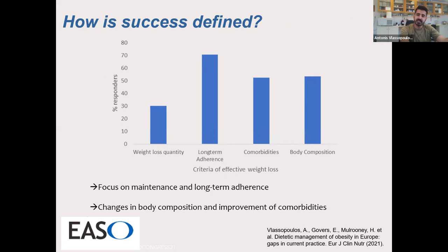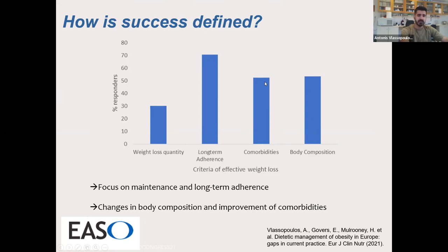When asked how they define success, only 30 percent said that weight loss quantity is how they measure success. Fifty-five percent said interestingly that they were interested in body composition, although not that many measured waist circumference or impedance. About 50 percent mentioned comorbidities, and about 70 percent said that long-term adherence to the plan was how they would define success — which was a bit contradictory with the fact that they did not really focus on weight loss maintenance or consider it a success point in their intervention.